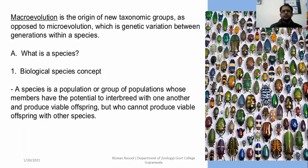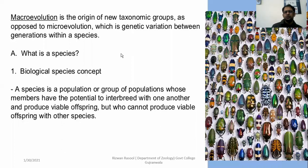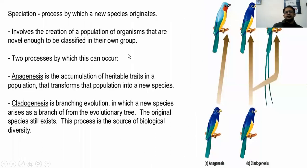A species is a group or population whose members have the potential to interbreed with one another and produce viable offspring, but who cannot produce viable offspring with other species. This is a common concept. Speciation is the process through which new species develop — the origin of new species.